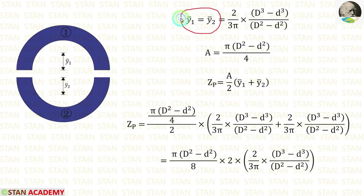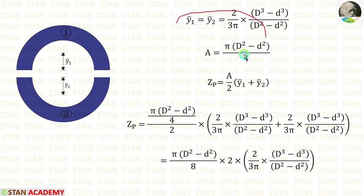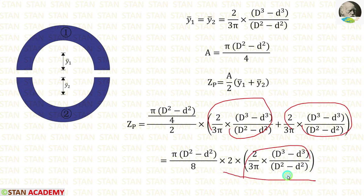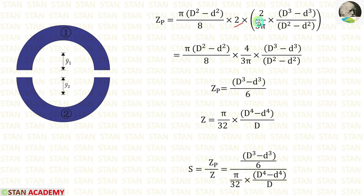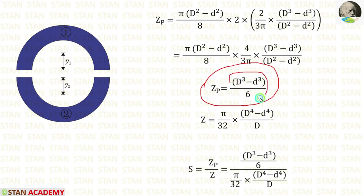We know that y1 bar is equal to y2 bar, as we have already seen. Now we can calculate Zp. The area is pi into caps D square minus small d square by 4, and y1 bar and y2 bar we have just calculated. Since both values are the same, we multiply one of them by 2. After canceling terms — 2 into 2 gives 4, eliminating common factors and pi — we finally get Zp equal to caps D cubed minus small d cubed, by 6.